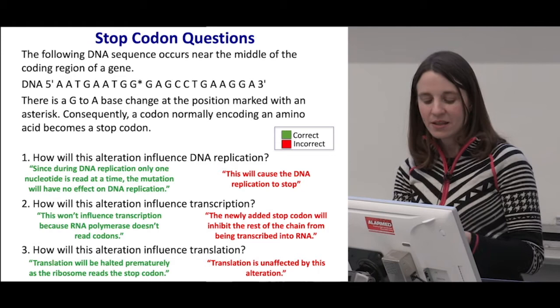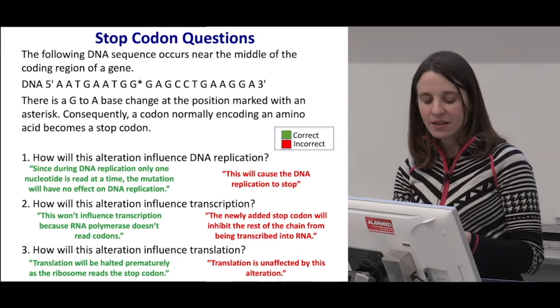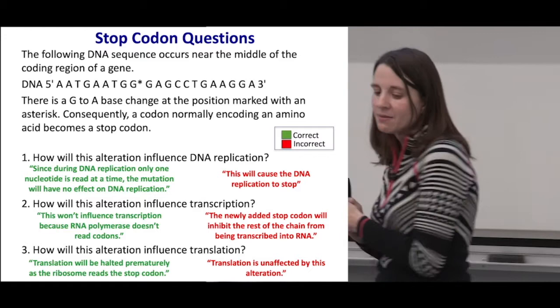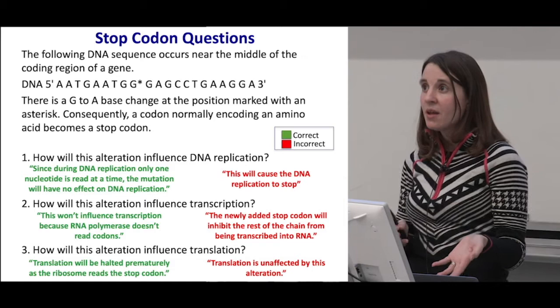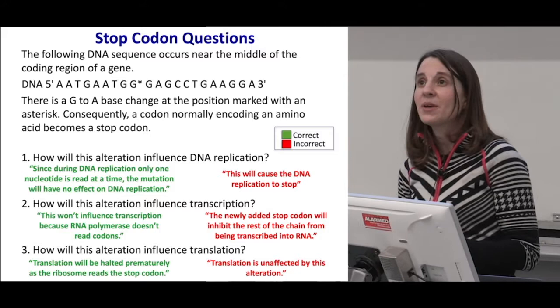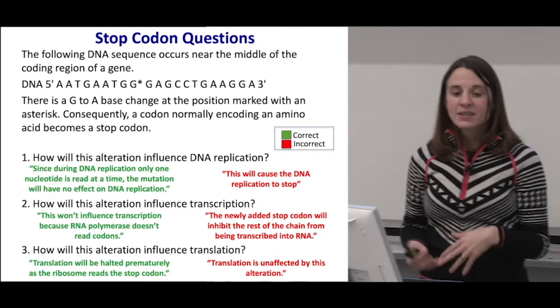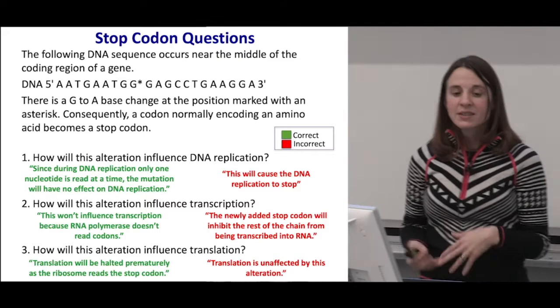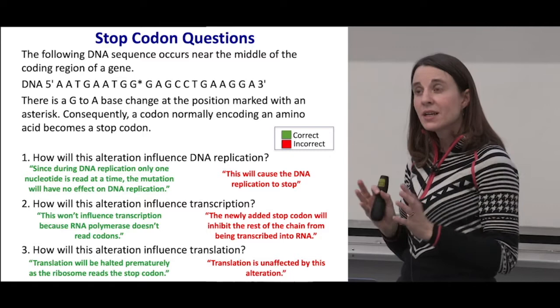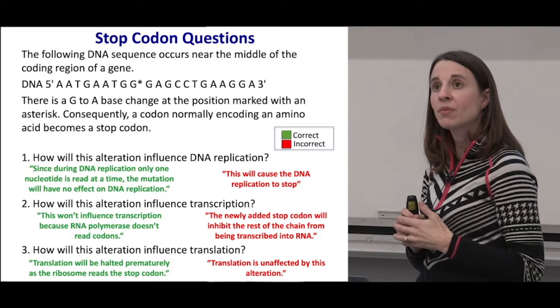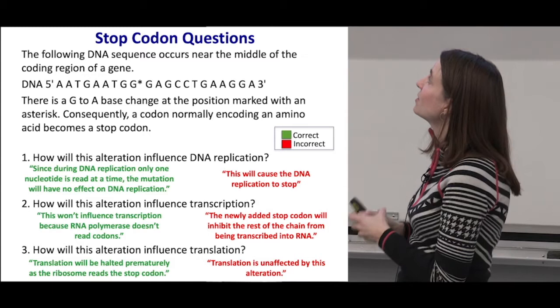For DNA replication, the correct answer is that there would not be an effect — since during DNA replication a nucleotide is read one at a time, the mutation has no effect. The incorrect answer is that this change would cause DNA replication to stop. For transcription, similarly, the stop codon won't influence transcription because RNA polymerase doesn't read codons. The incorrect answer is that the stop codon will prohibit DNA from being transcribed into RNA. For translation, it's the opposite — translation will be halted when it reaches the premature stop codon.